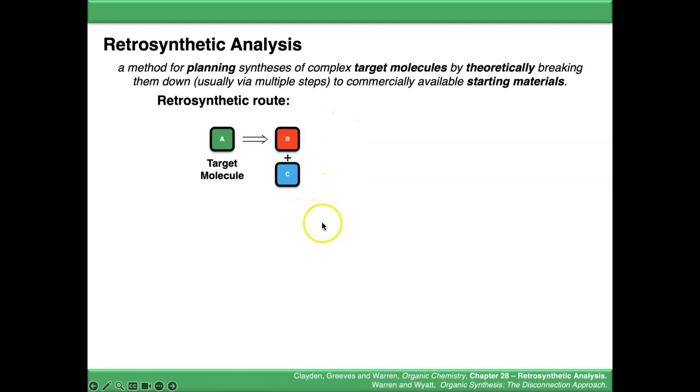If either B or C aren't commercially available, in other words you can't buy them from a chemical supplier, you're going to need to break them down further. Using more retrosynthesis arrows, you can break down these intermediates until you eventually end up with starting materials that are commercially available.